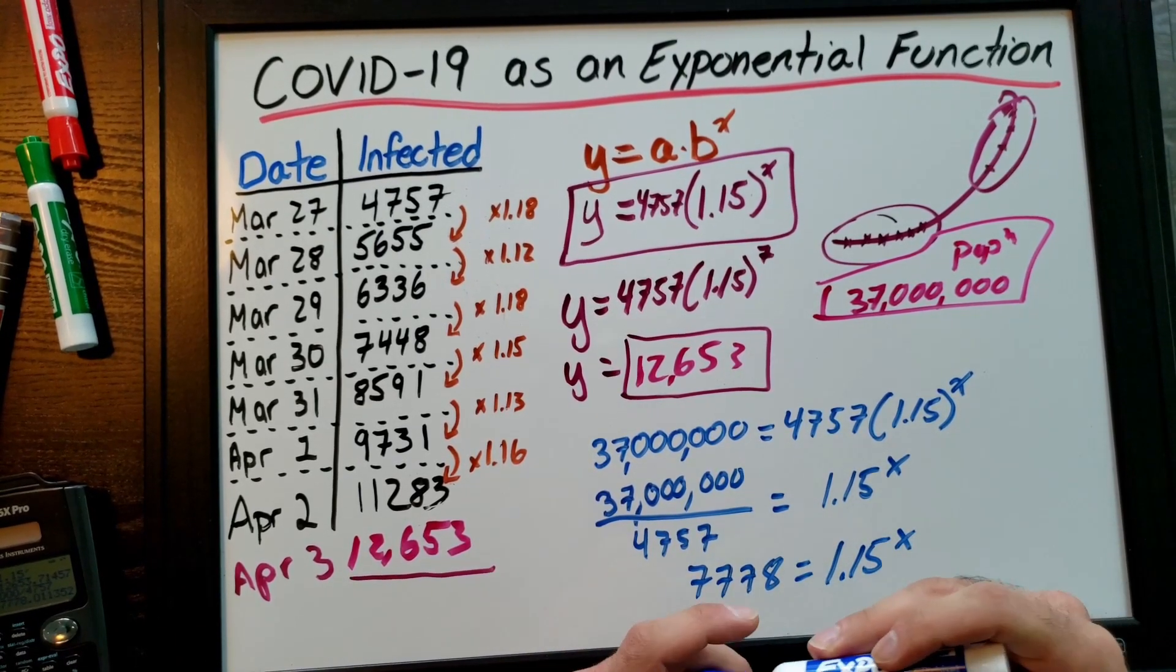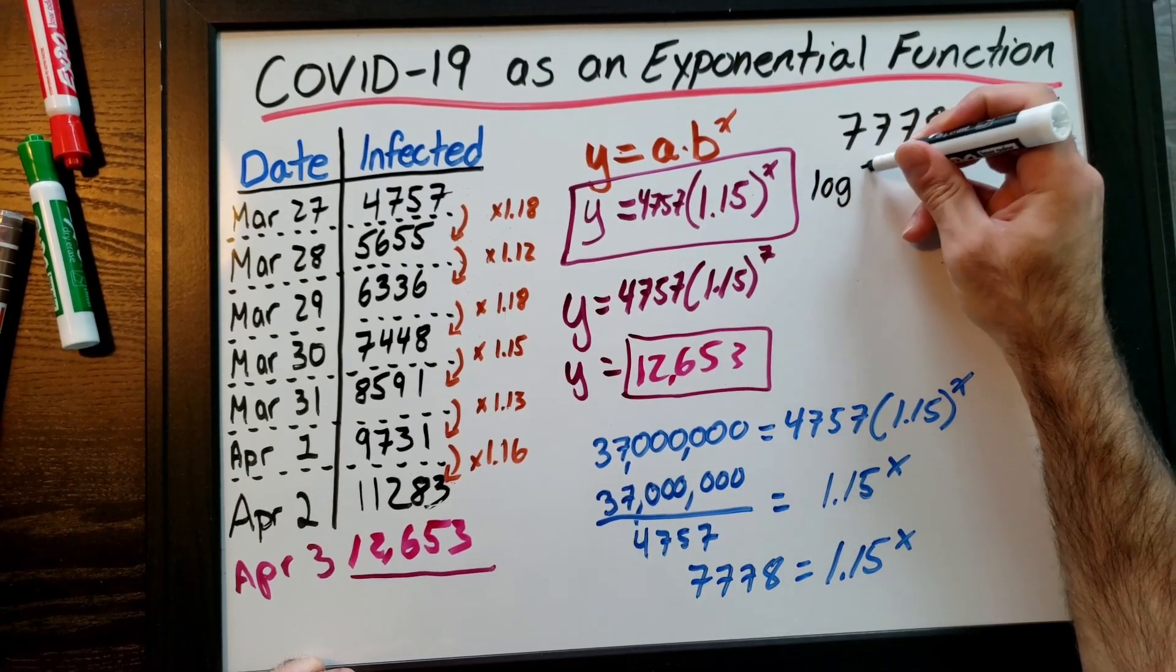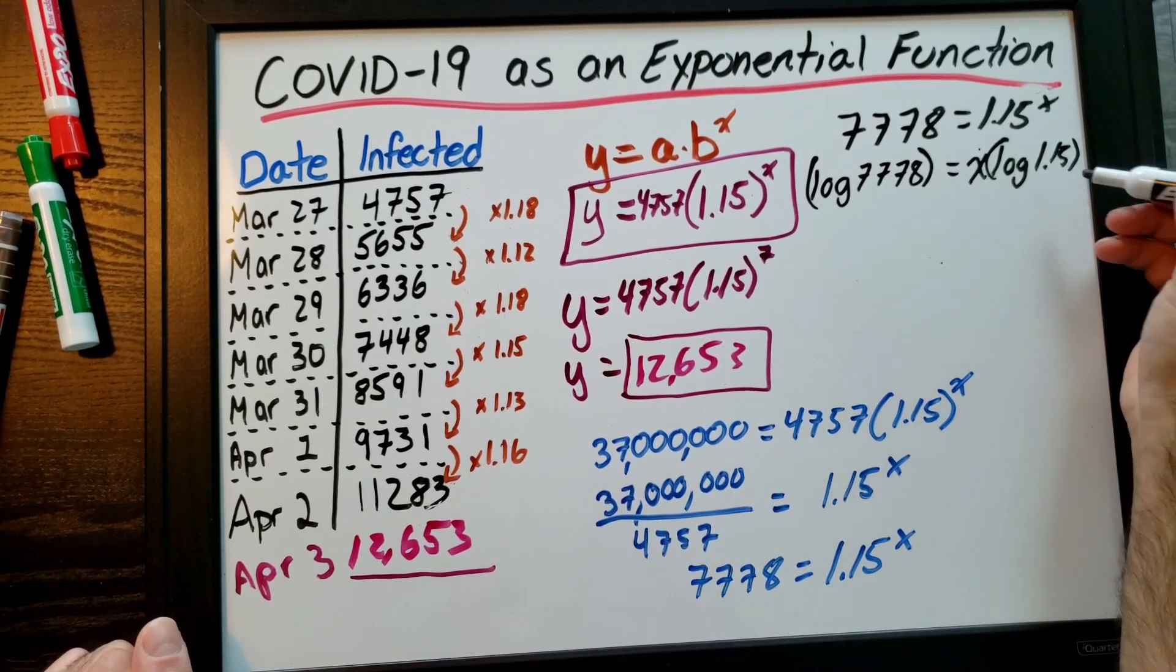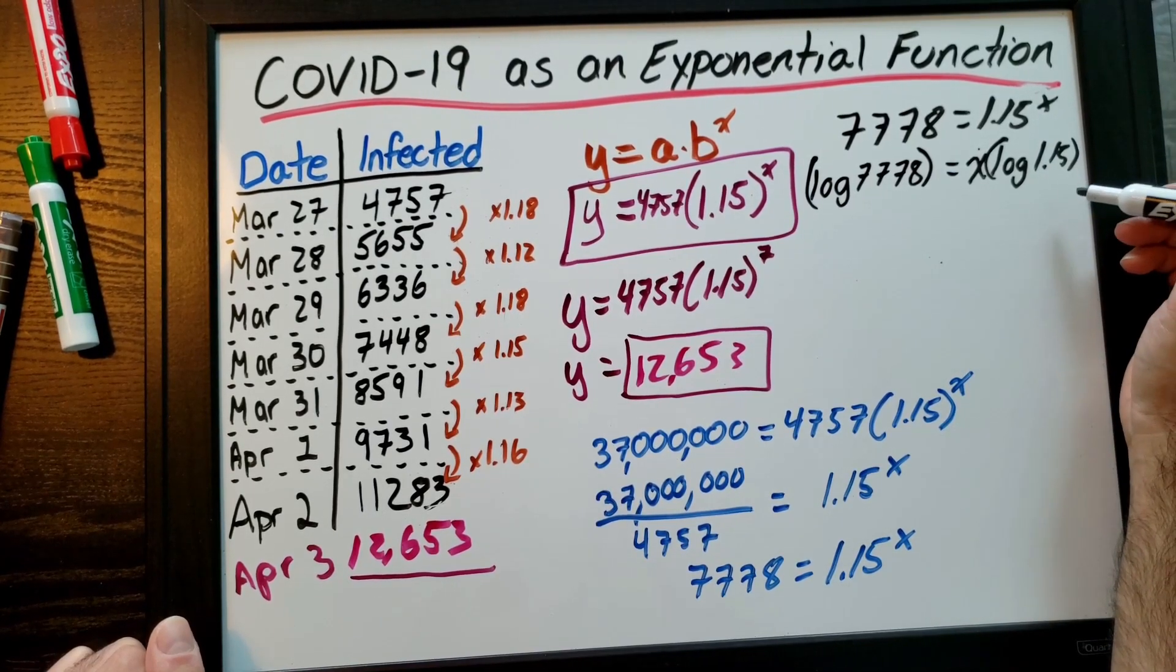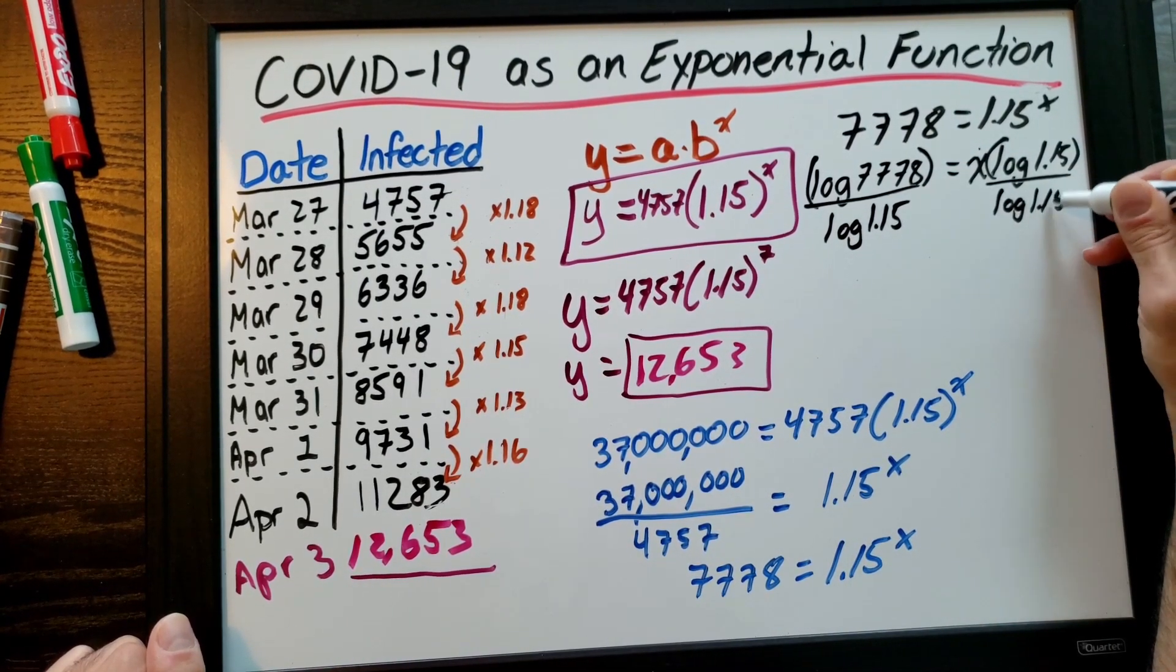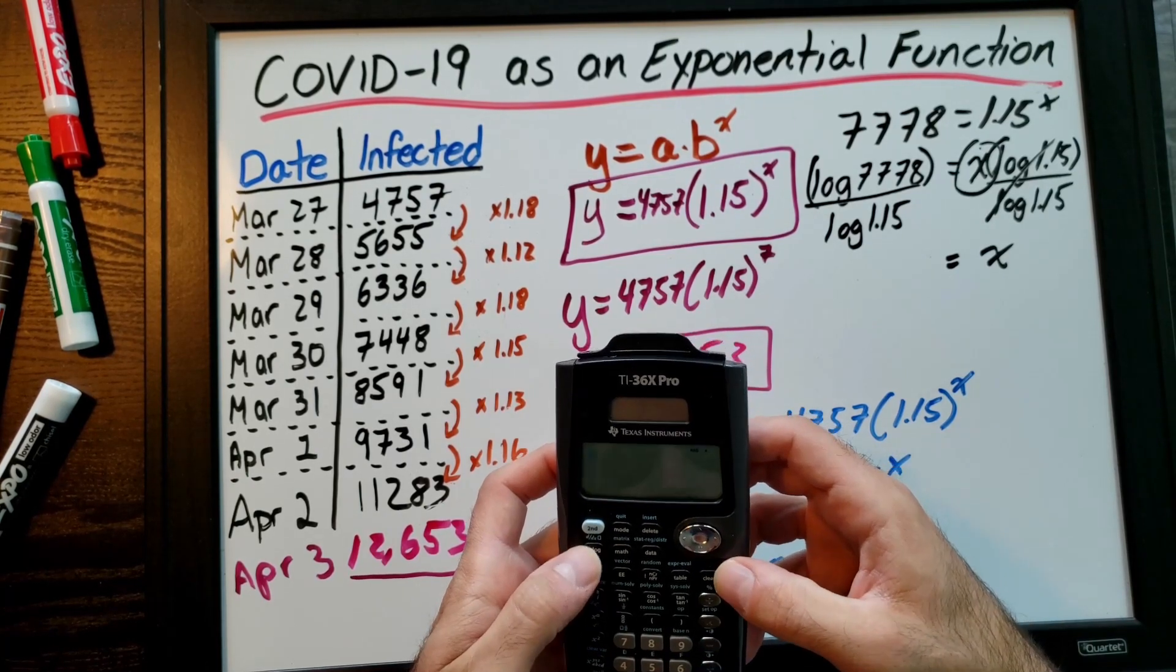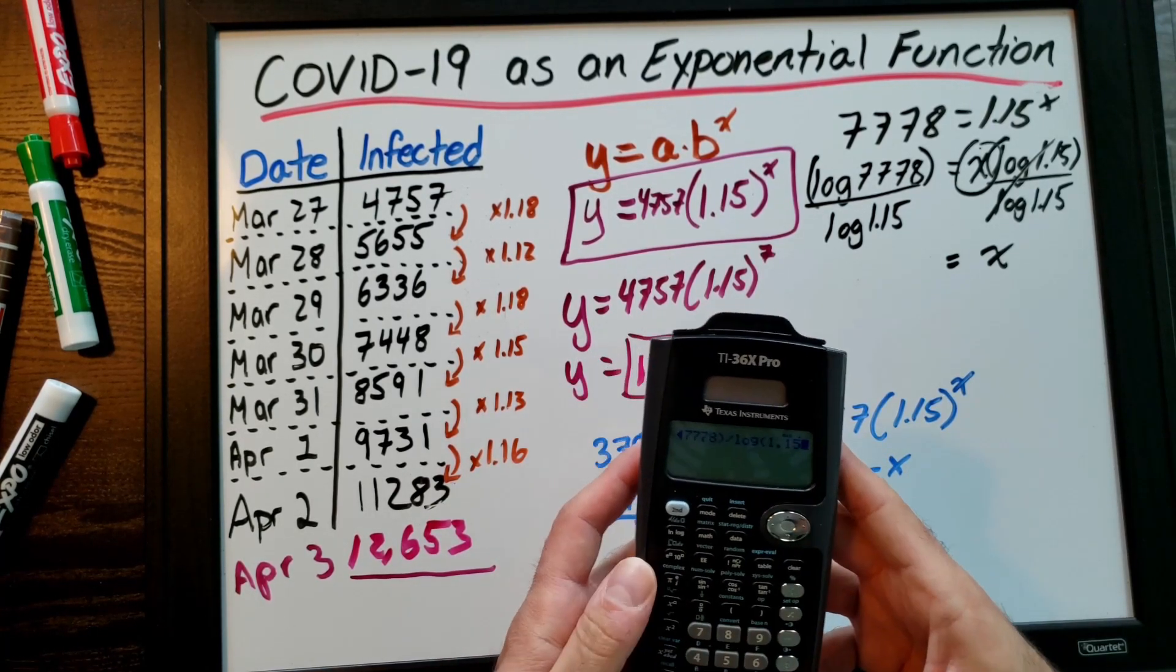We're going to solve for x. I've got to divide by 4,757, so 37 million divided by 4,757 equals 7,778. From here I'm going to find the log of both sides, which brings down my exponent of x. Now with my exponent finally down in the same line as everything else, I can divide both sides by log 1.15. I'm going to pick up my calculator: log of 7,778 divided by log of 1.15, and I get 64 days.